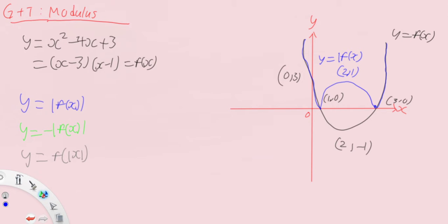Now for y equals minus mod f(x), we're going to get strictly negative values because mod f(x) is always positive. The negative of an always-positive value or zero gives you an always-negative value or zero. Anything that is negative will remain as negative, anything that is zero remains as zero. So the region between 1 and 3 remains as it is. However, for regions beyond x equals 3 and less than x equals 1, they're all positive initially, and because we take the modulus and negate it, they become negative — so we need to flip those portions about the x-axis.